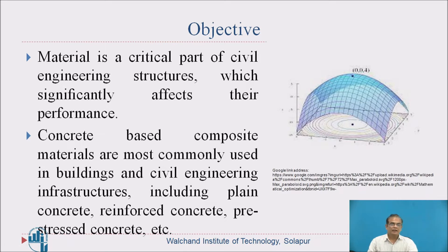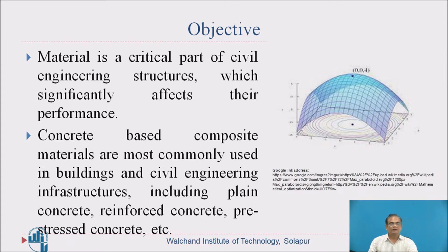Material is a critical part of civil engineering structures which significantly affects their performance. Materials are very important. Concrete-based composite materials are most commonly used in buildings and civil engineering infrastructures, including plain concrete, reinforced concrete, pre-stressed concrete, etc. In concrete there are different types such as PCC, RCC, and pre-stressed concrete — all these materials are studied properly to decide how optimization can be done in civil engineering.